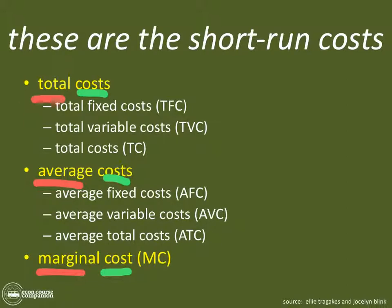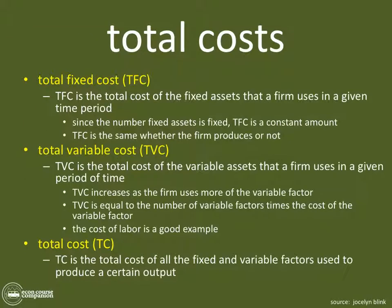Total, average, marginal cost — in this case the cost factor — what you always want to think about is what's in the denominator. For cost, what's going to be in the denominator is going to be the same thing whether they're fixed, variable, or total. Let's take a look.